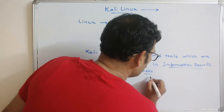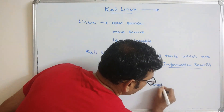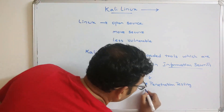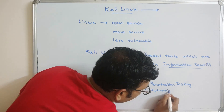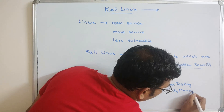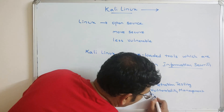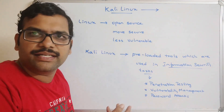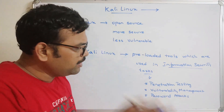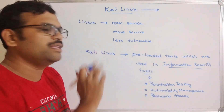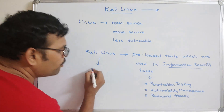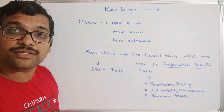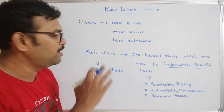What are these information security tasks? These include penetration testing — which means checking out for vulnerabilities — as well as vulnerability management, password attacks, wireless attacks, computer forensics, and reverse engineering. For all these information security tasks, there are pre-loaded tools available in Kali Linux. This Kali Linux supports more than 350 tools related to information security, and this is the major reason why hackers choose Kali Linux.